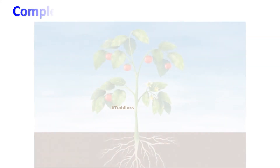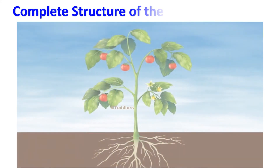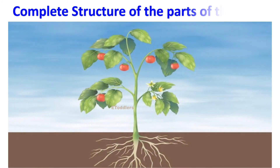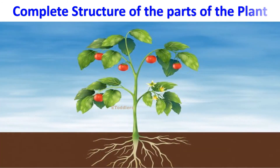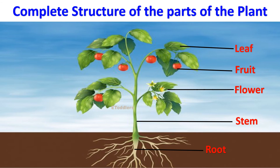Complete structure of the parts of the plant: Root, Stem, Flower, Fruit, Leaf, Bud.